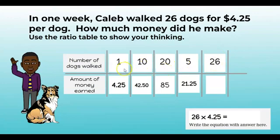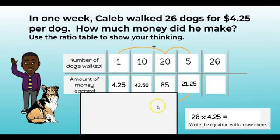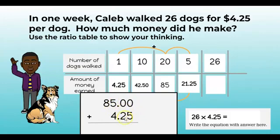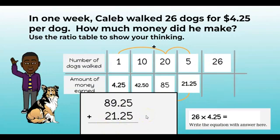Now we want to get to 26. We have 5, 20, 10, and 1. We have 25 and then 1, so I'm going to add these three groups together. I'll start with the smallest and add to my group of 20, which is 85. So: eighty-five plus four dollars and twenty-five cents. Put in zeros as place value holders. Twenty-five cents plus zero is twenty-five cents. Don't forget to bring down the decimal. Five plus four is nine, eight plus zero is eight — so eighty-nine dollars and twenty-five cents.